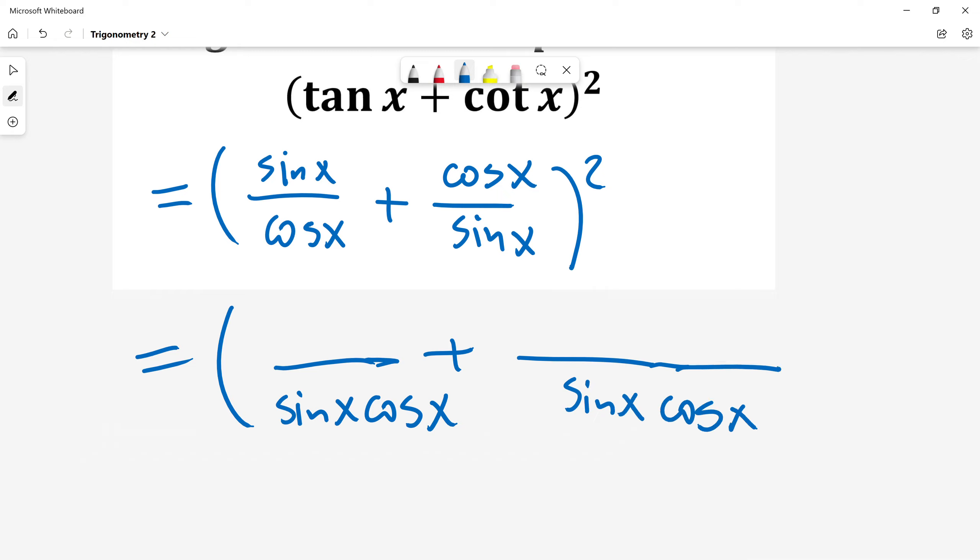First denominator I multiplied by sin x so I will multiply numerator by sin x as well. So I will have sin squared x. Second denominator I multiplied by cos x so I will multiply by cos x numerator as well. And I will have cos squared x. This is all squared.